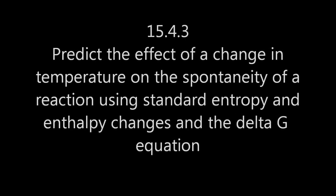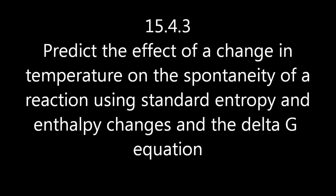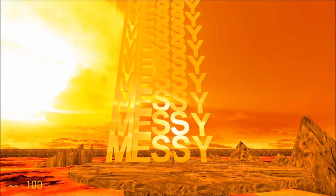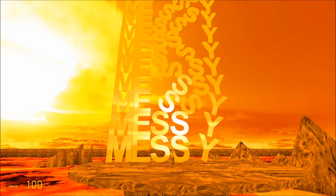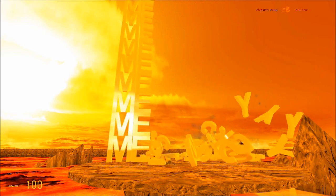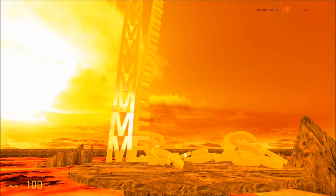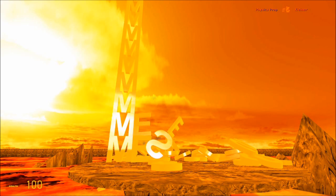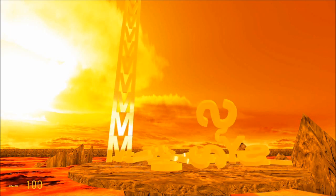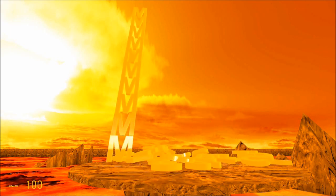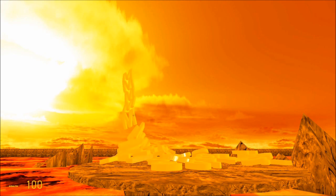Predict the effect of a change in temperature on the spontaneity of a reaction. Nature likes its reactions hot and messy. A hot and messy reaction will always be spontaneous. By hot, I mean exothermic. Delta H is negative. And messy, I mean the entropy is increasing. Delta S is positive. So hot and messy reactions will always be spontaneous. Delta G will be negative.